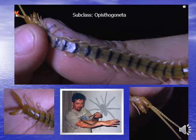In Scolopendra, the body is divided into a head and a long segmented trunk. Each segment is attached to one pair of legs. The trunk has twenty-one pairs of legs, and with the antennae it forms twenty-two pairs of appendages, meaning forty-four legs total.